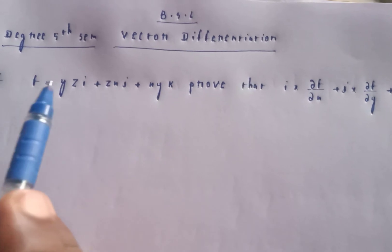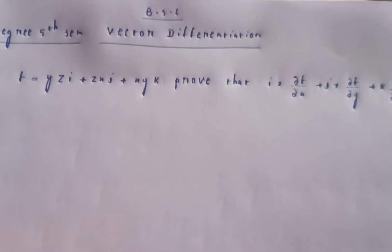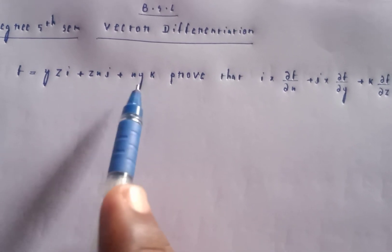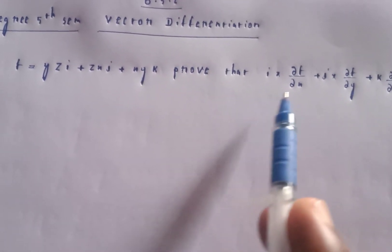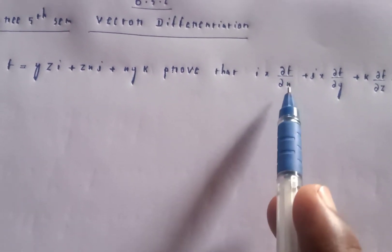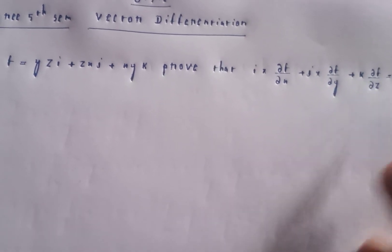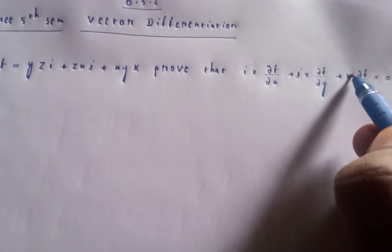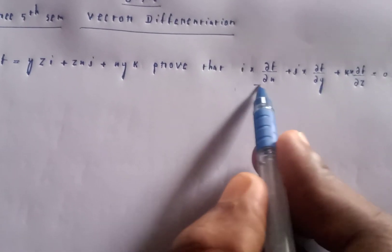Welcome to my channel. BSE degree fifth semester, vector differentiation. If f is equal to yzi plus zxj plus xyk, prove that i cross ∂f/∂x plus j cross ∂f/∂y plus k cross ∂f/∂z is equal to zero.